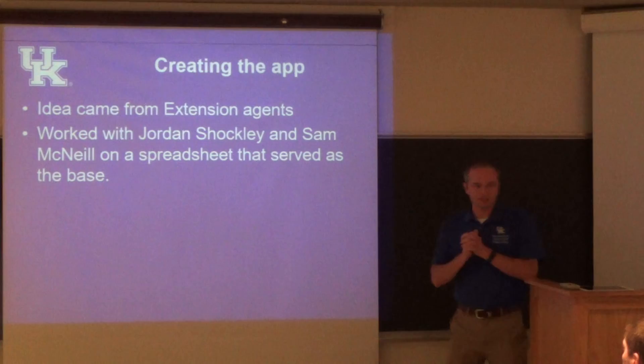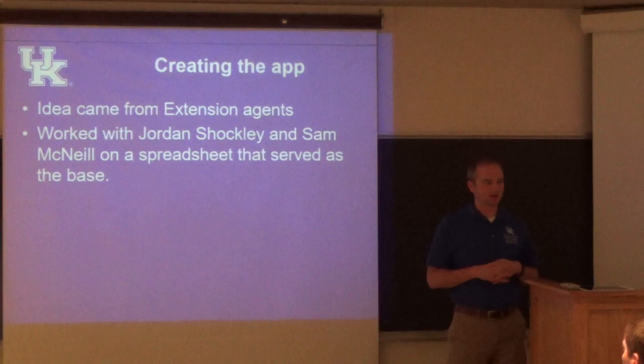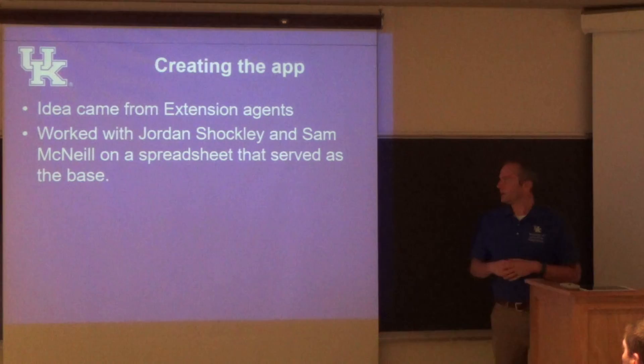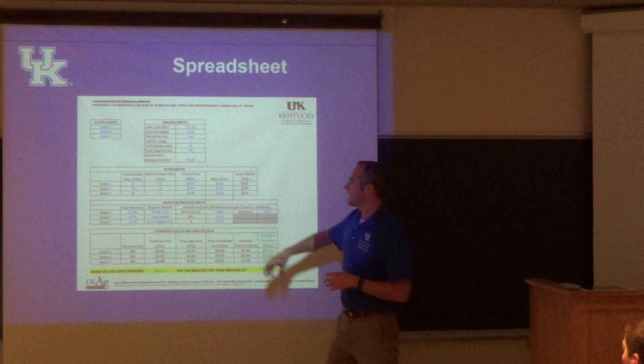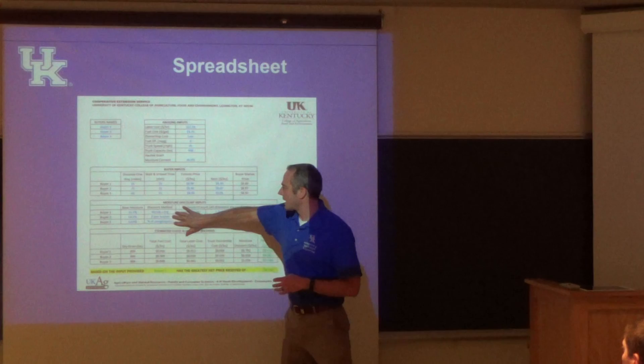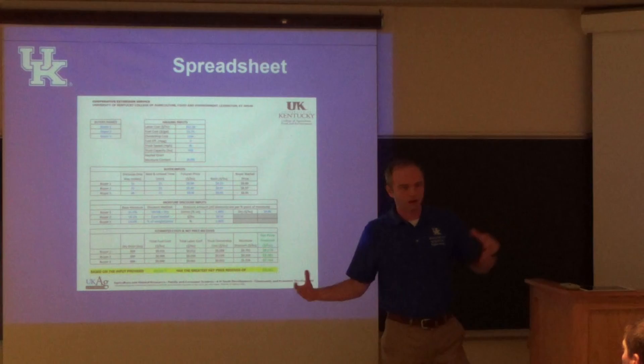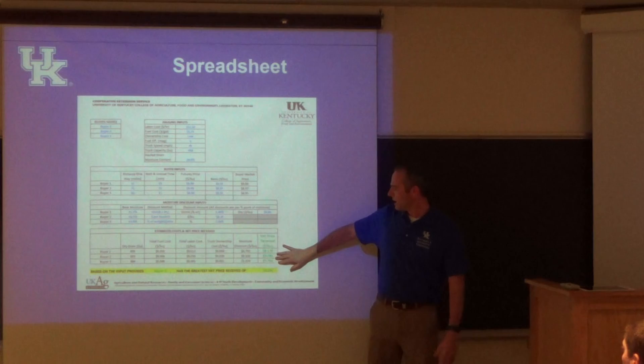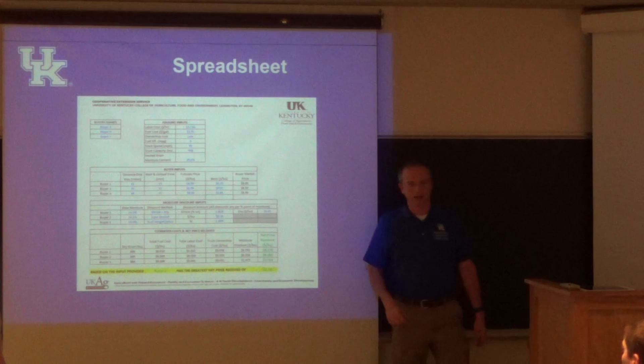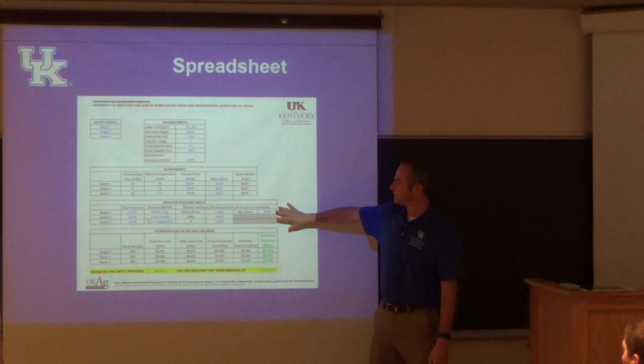The idea for the app came from extension agents — producers were talking to them about a problem they couldn't figure out on their own. So we worked with Jordan Stockley and Sam Camille on a spreadsheet. The spreadsheet takes into consideration all the different ways you can calculate discount methods. You input things like average truck speed and distance to each elevator, and it gives you a net price received and tells you which buyer is offering the highest price.